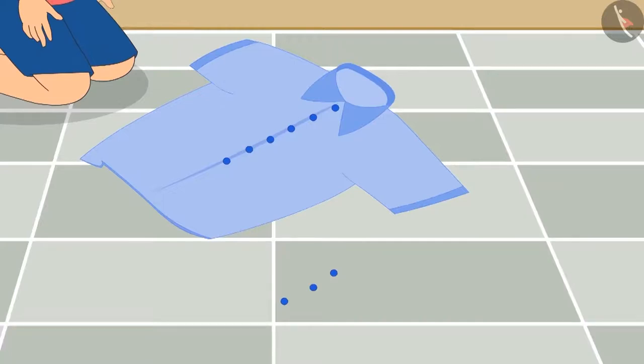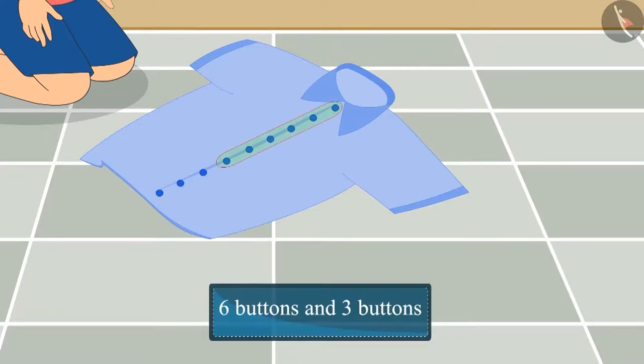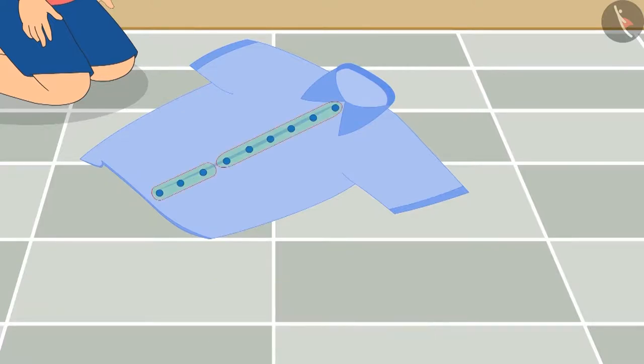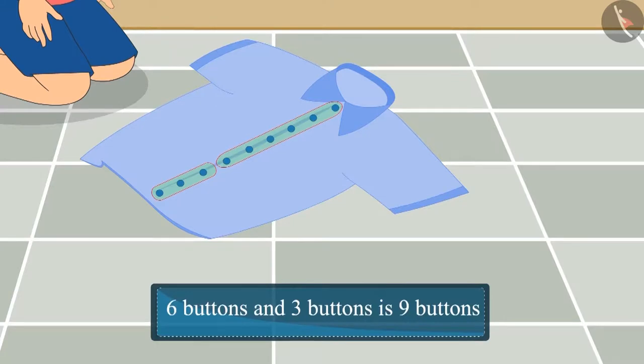Good work. In the end, Chutu stitched three more buttons on his shirt. So now there are six buttons and three more buttons. Now what is the total number of buttons stitched on his shirt? Yes, nine buttons.